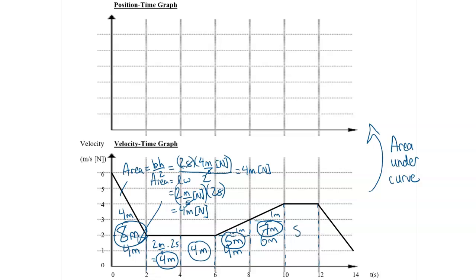And then we go from ten to twelve, and we have eight meters because every little rectangle is two, there's four of them, that's eight meters.